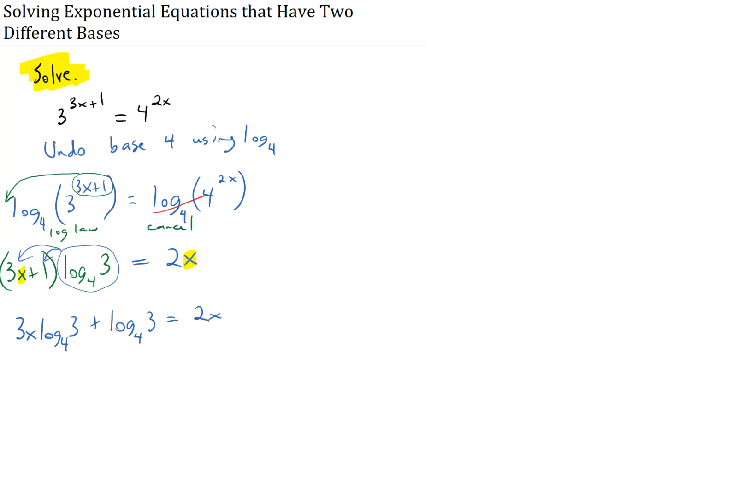Now, I've got no parentheses, but I still have this term with an x and I have this term with an x. I need my x terms on the same side. So, I'm going to leave this guy on the left and I want to get rid of the 3x log base 4 of 3 on the left. So, the way to do that because it's added is I'll subtract it from both sides.